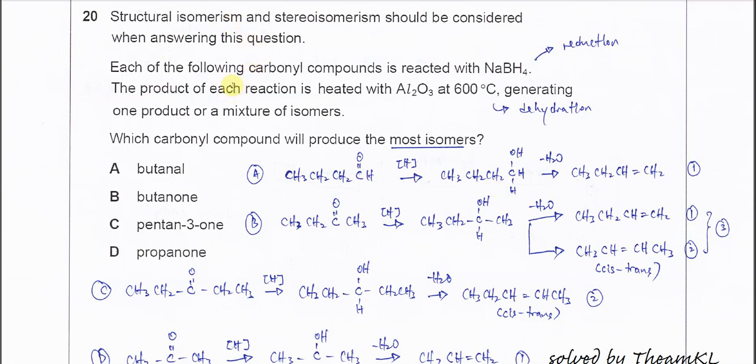So the first reaction is the reduction because the compounds react with sodium borohydride. After that, the product is heated with alumina at 600 degrees C.